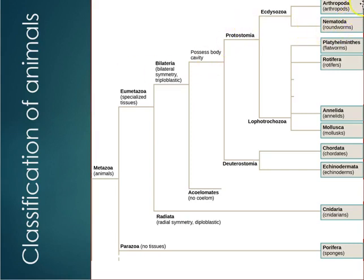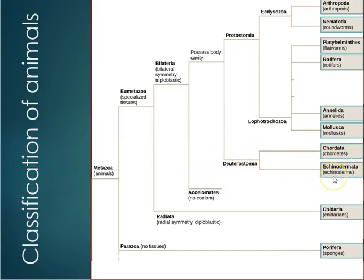That covers all the Ecdysozoans and all the Lophotrochozoans. Now we move to the deuterostomes. Remember, the key difference between protostomes and deuterostomes is that in deuterostomes, during embryological development, the first opening of the digestive tract — the blastopore — becomes the anus. The two remaining phyla, echinoderms and chordates, are both deuterostomes.